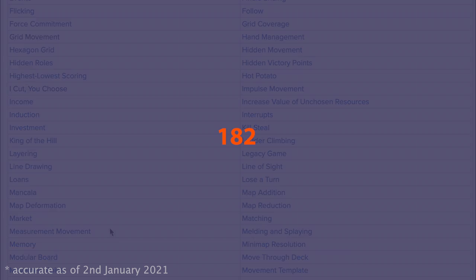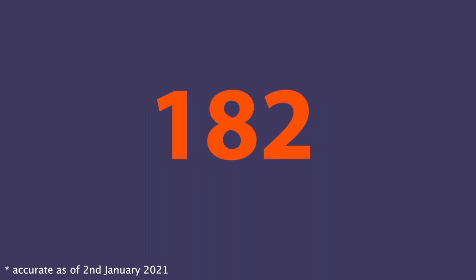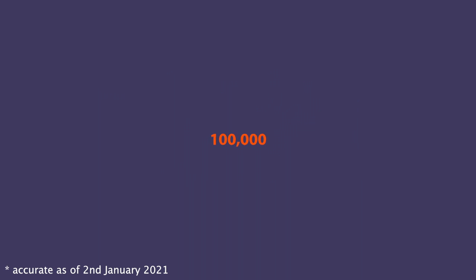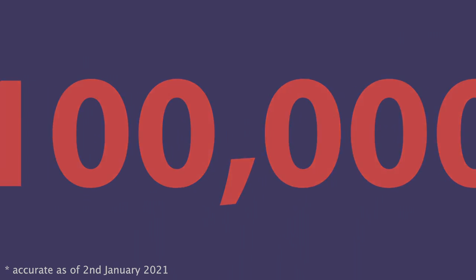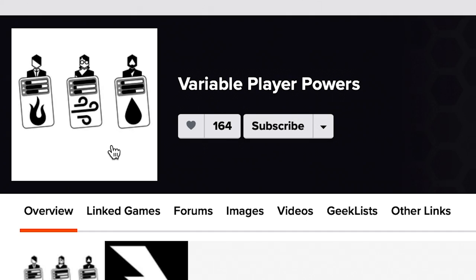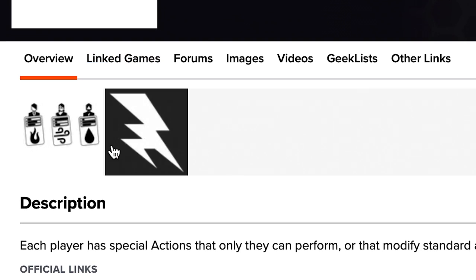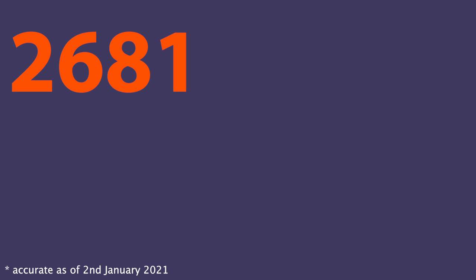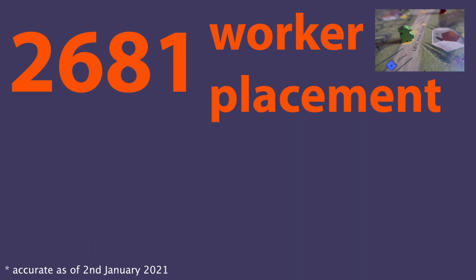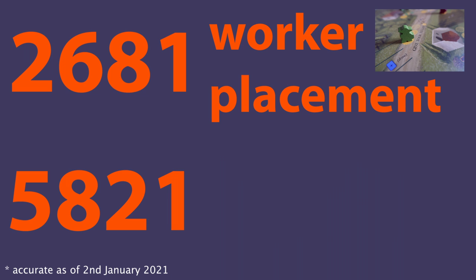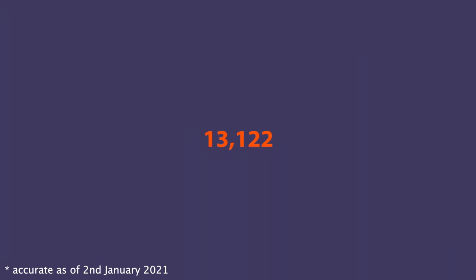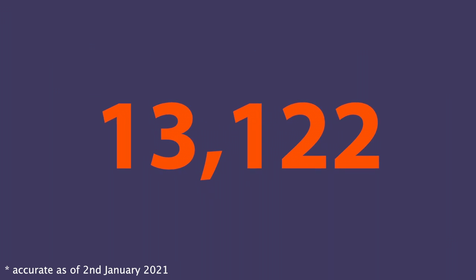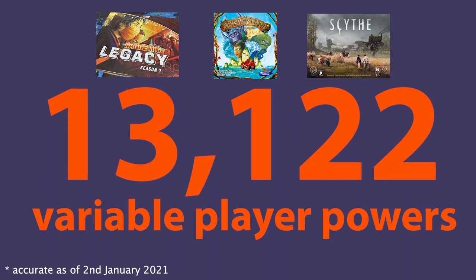The BoardGameGeek website has a fantastic list of game mechanics. At the time of writing, this list contains 182 different mechanics that are used in creating the over 100,000 tabletop games listed in their system. When selecting one, you can also see a list of the number of games which use that mechanic. For example, there are 2,681 games that utilise worker placement, 5,821 games that involve movement on a grid, and a whopping 13,122 games that have variable player powers.